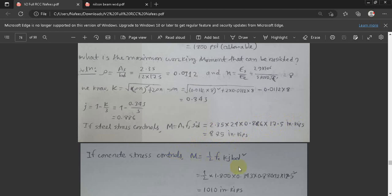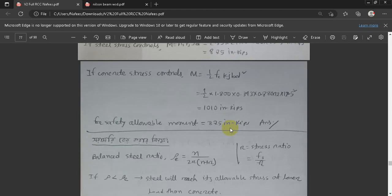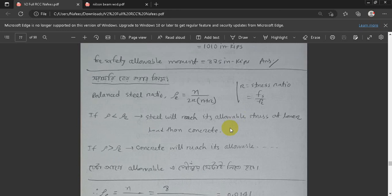We know j value is 0.875. n plus r, so r is the stress ratio, or steel stress divided by concrete stress, f_s by f_c. If the original reinforcement ratio, the balanced steel ratio is less than that, steel will reach its allowable stress at lower than concrete stress, or steel controlled. That means, not only by the same rule, but is steel controlled.